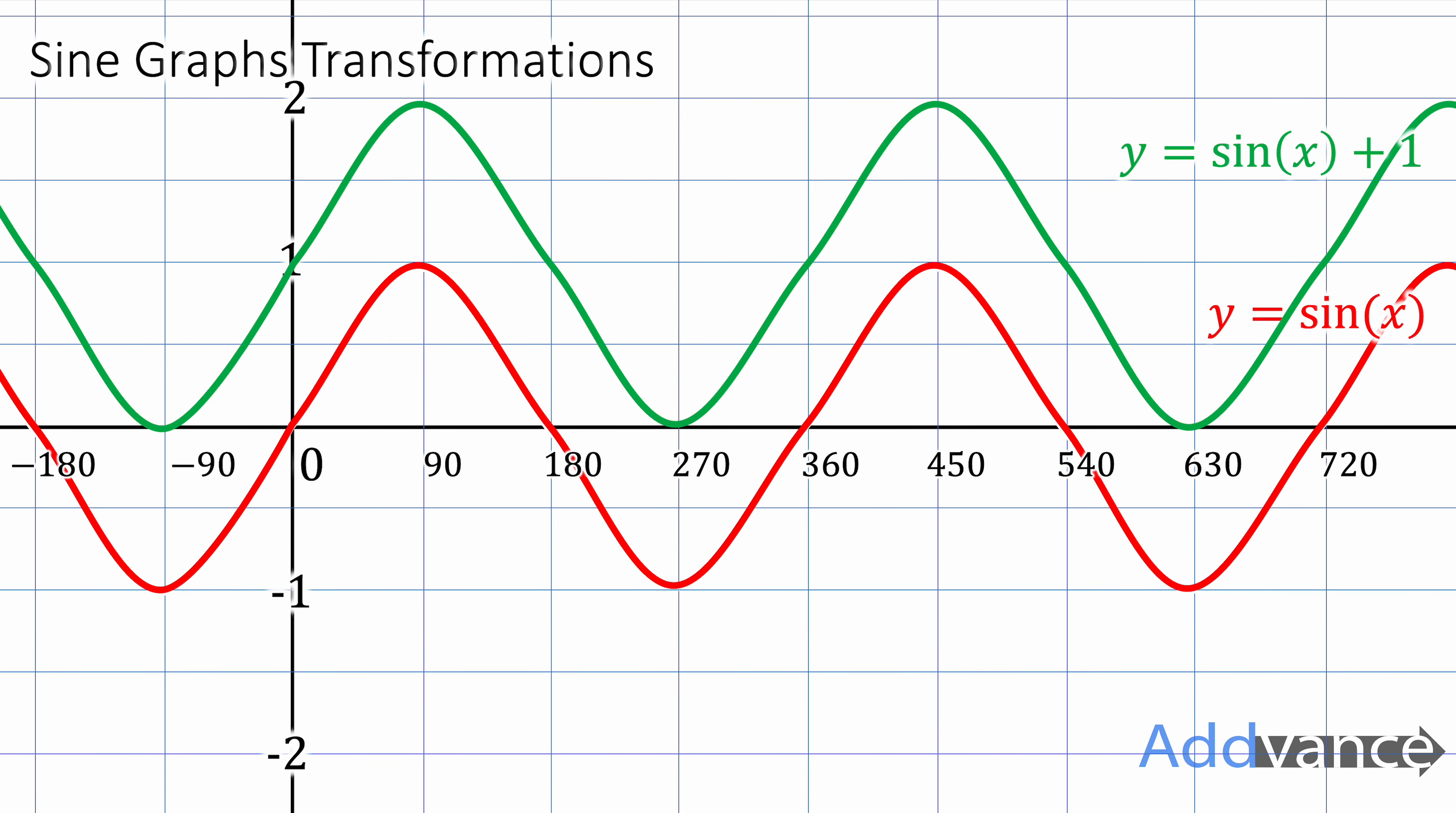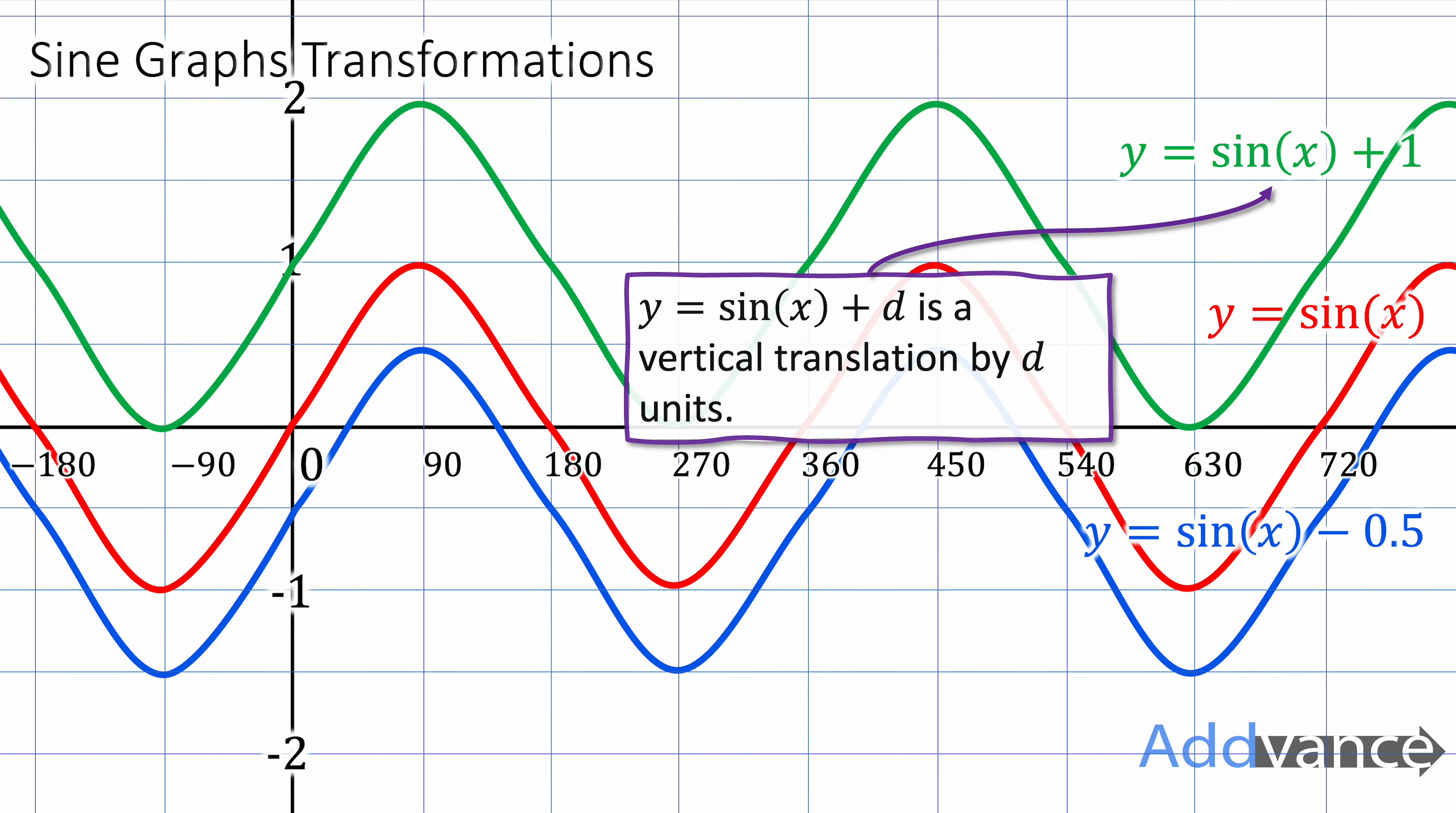Now let's look at some of the transformations. Here we've got sin of x plus 1 which just shifts the graph up by one space. Or you could also have y equals sin of x minus 0.5 and that shifts it down 0.5 spaces. So y equals sin of x plus d is just a vertical translation by d units. This is very similar to your normal transformations.